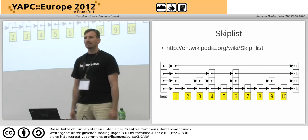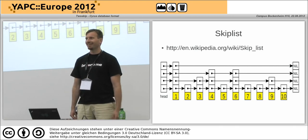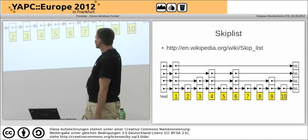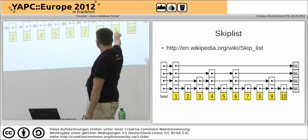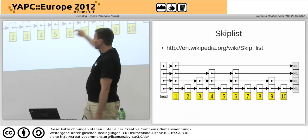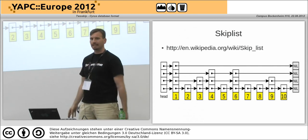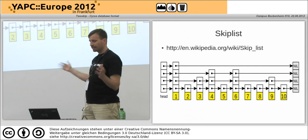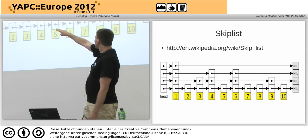How many of you have heard of SkipLists before? A brief guide to a SkipList: it's a linked list with additional linked lists kind of randomly scattered throughout it so that you can, in theory, get a log-n lookup.